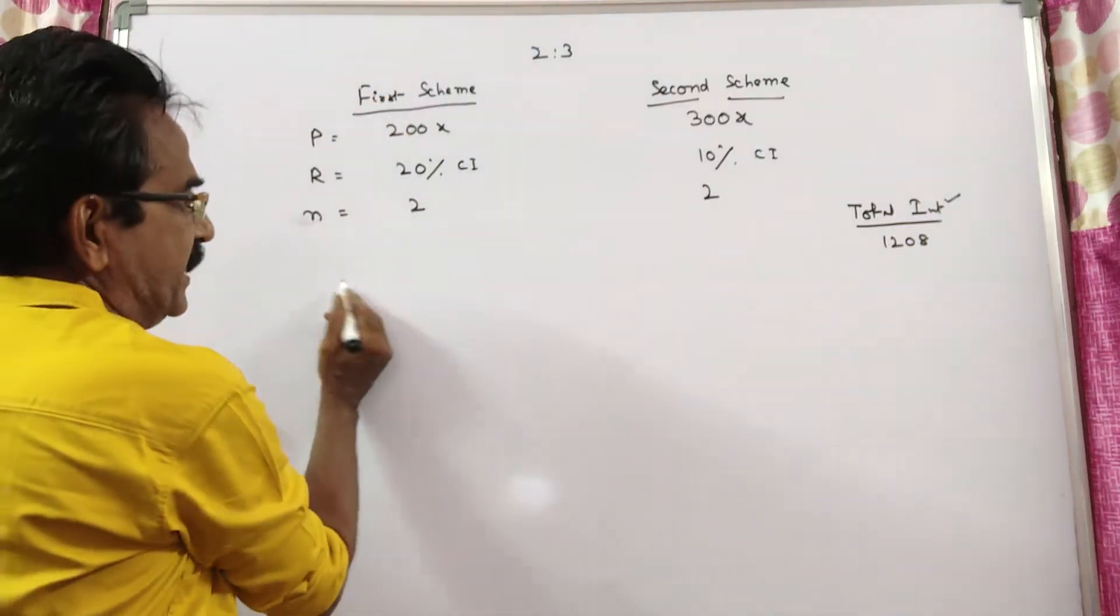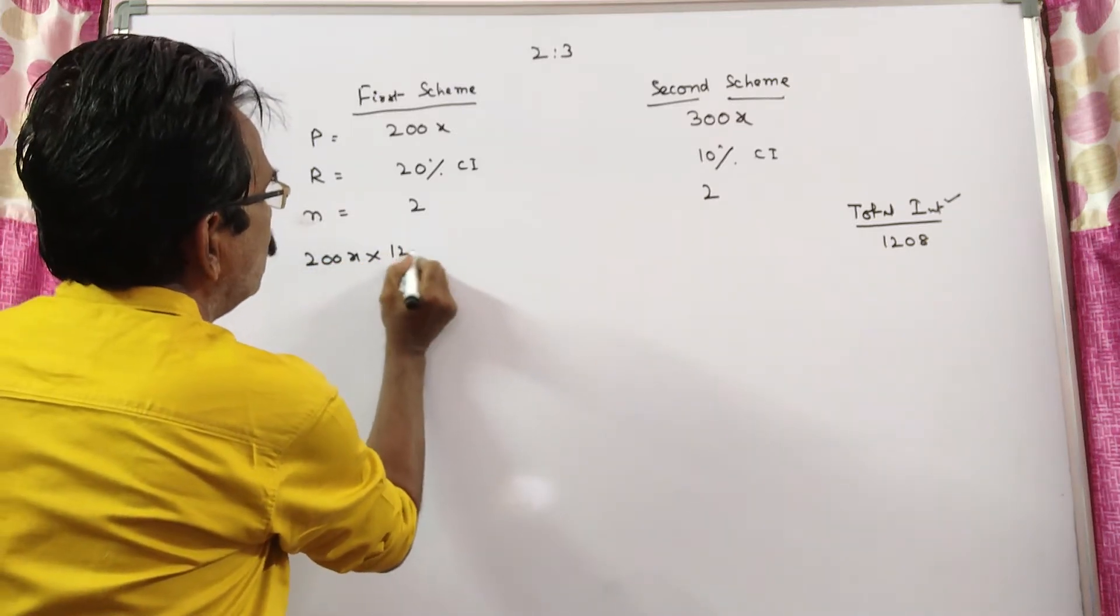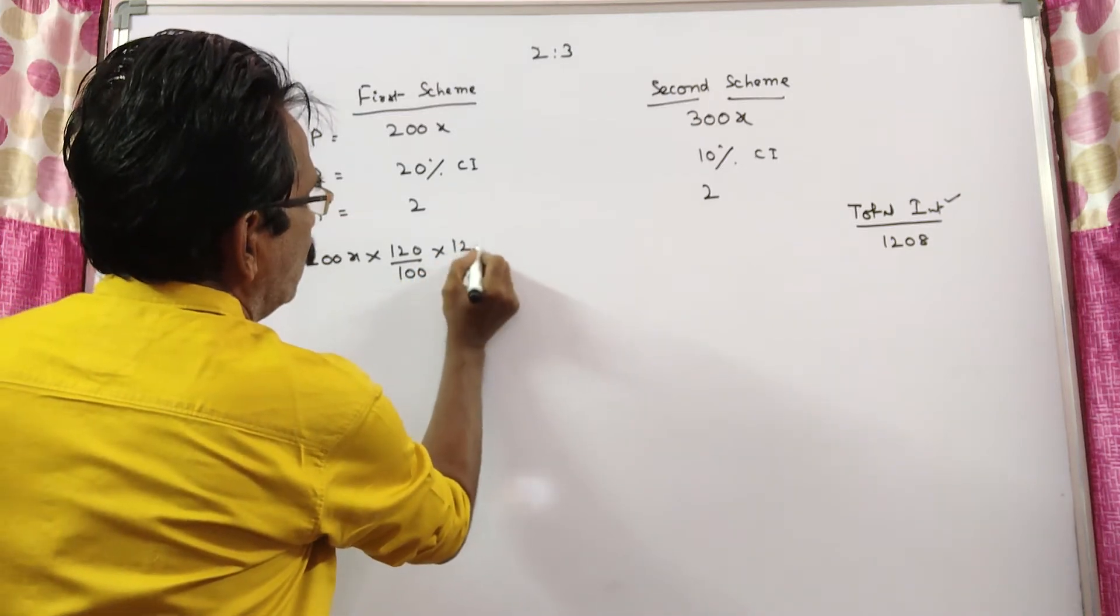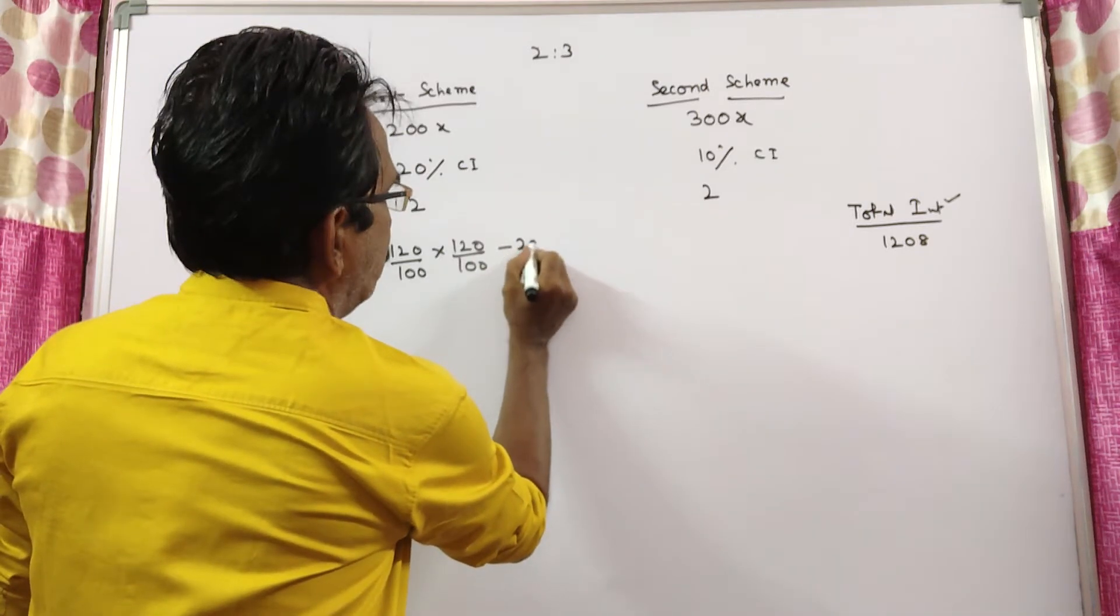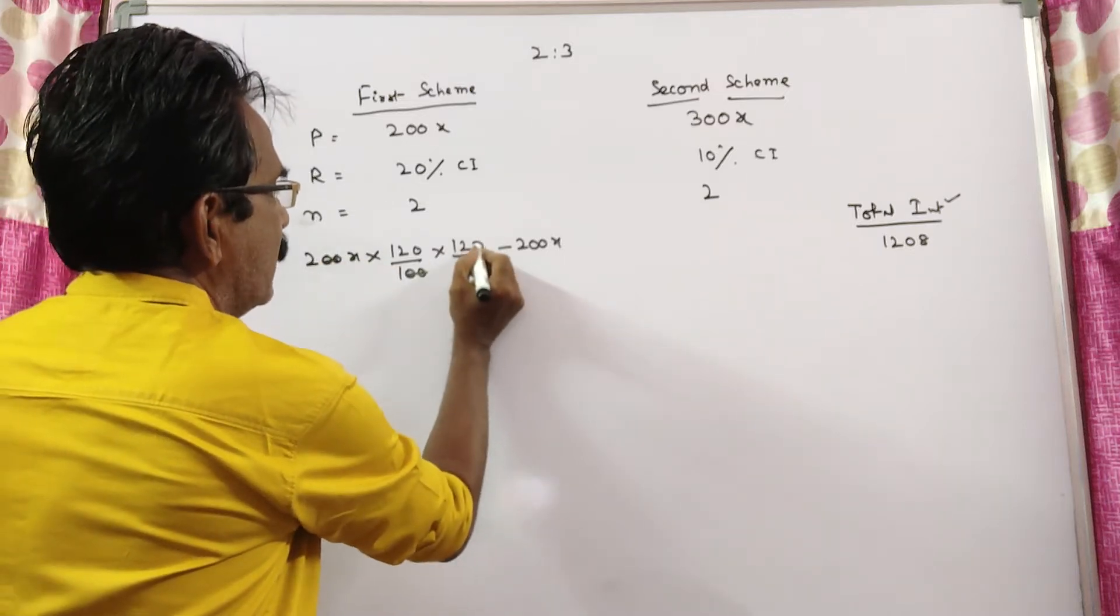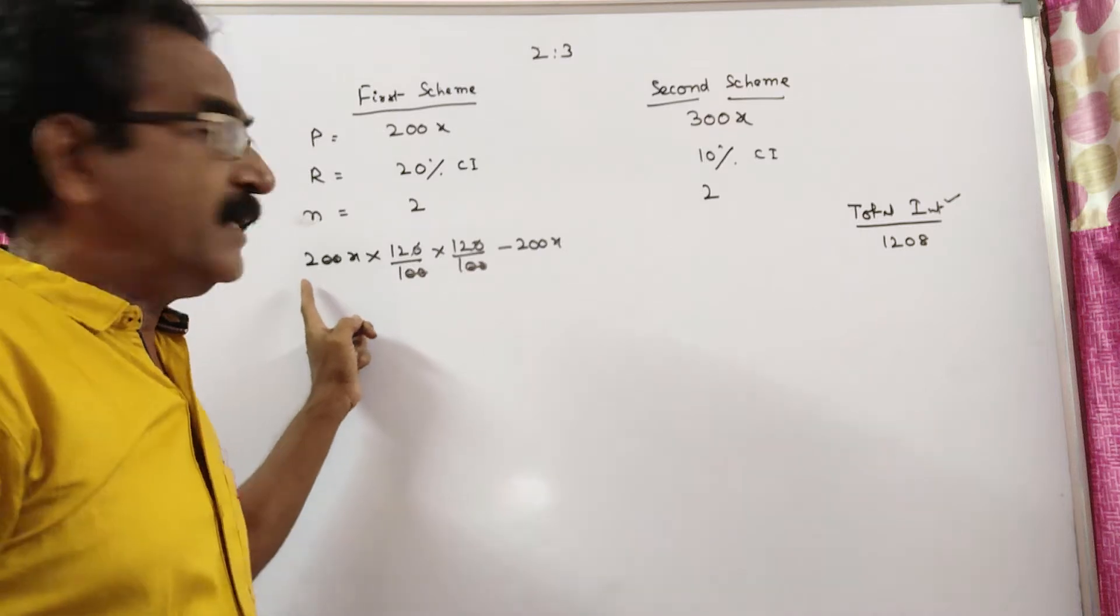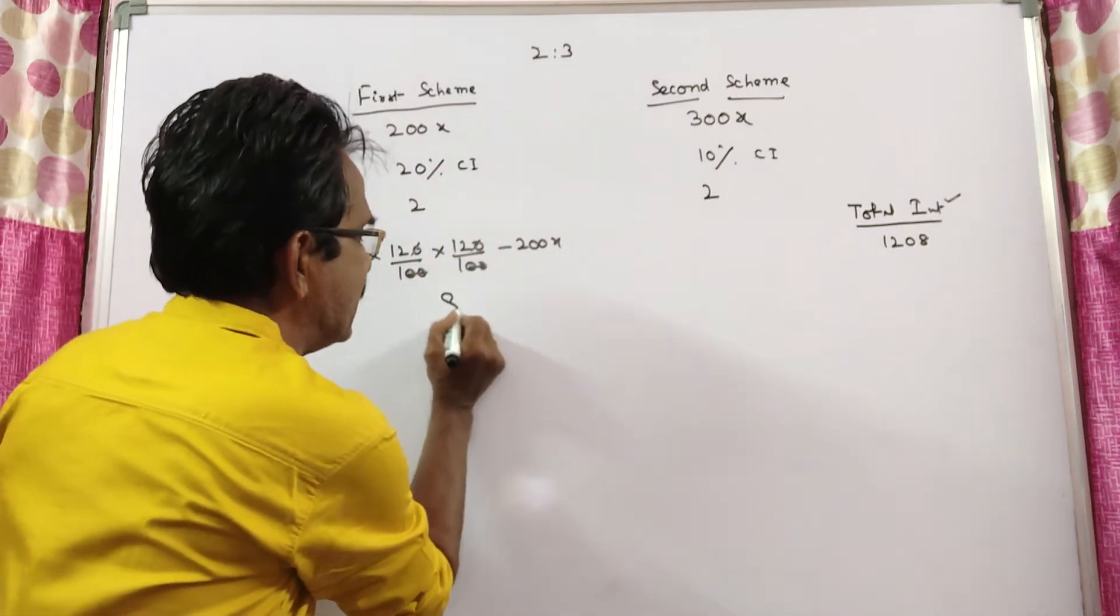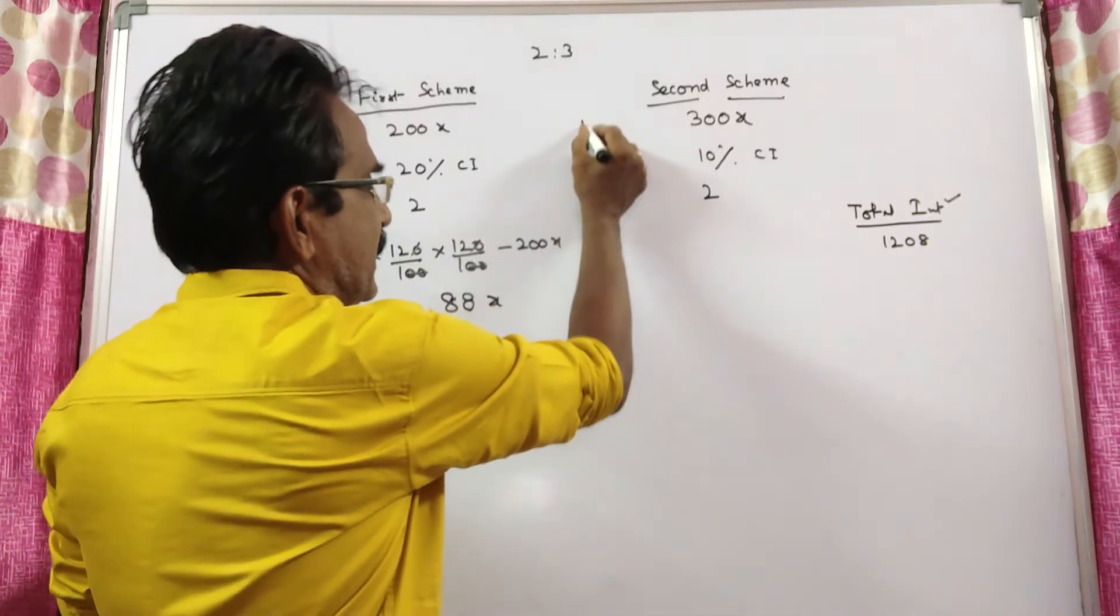Here the compound interest is equal to compound interest amount 200x into 20%, 120 by 100 into 120 by 100, this is compound interest amount minus principal, principal 200x. So here, what is the compound interest? 12 times 144, 144 into 288, 288x minus 200x. Here he gets 88x in interest and let us see here.